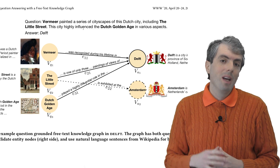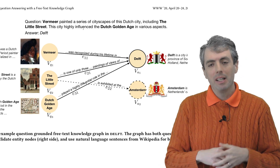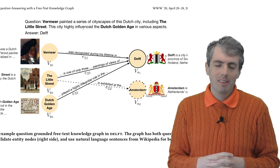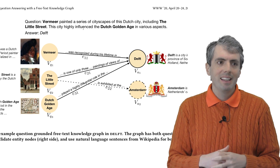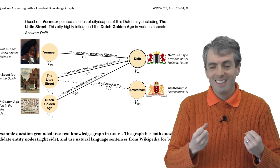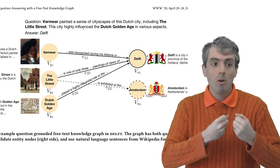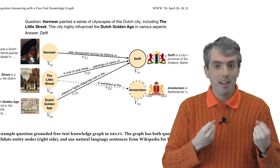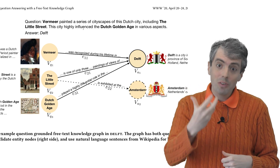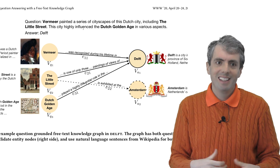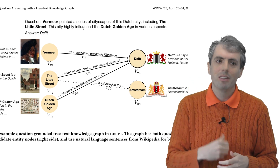Here's an example of what you can do once you have a large text collection where you've linked entities to their corresponding Wikipedia pages — you can do a better job of answering questions. For example, given the question: Vermeer painted a series of cityscapes in this Dutch city, including The Little Street. This city highly influenced the Dutch Golden Age in various aspects. You can look at the entities mentioned — Vermeer, The Little Street, and the Dutch Golden Age — and see how in the Wikipedia graph those entities connect with other entities. The common link that ties them all together is the entity Delft, which has its own Wikipedia page describing it as a city in the province of South Holland, Netherlands. Each of those gets a neural representation, and you can combine all of those together to figure out that the answer to this question is Delft.